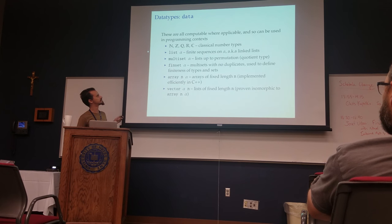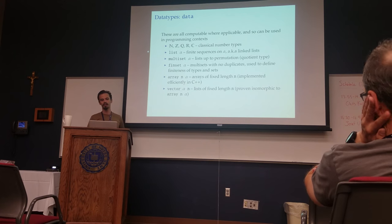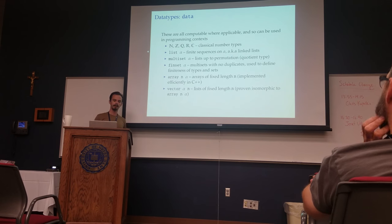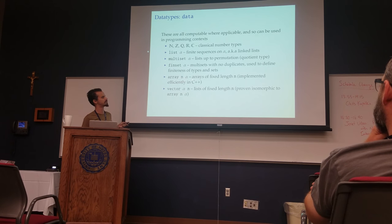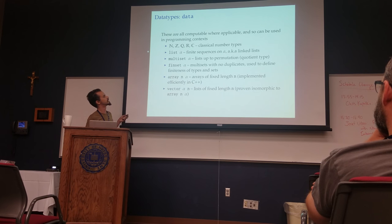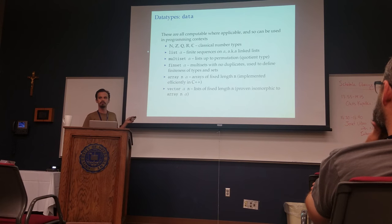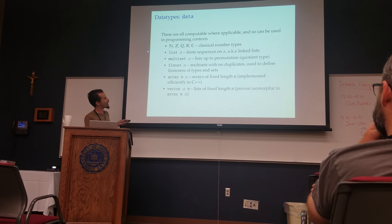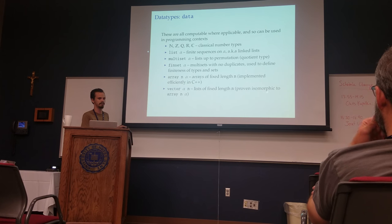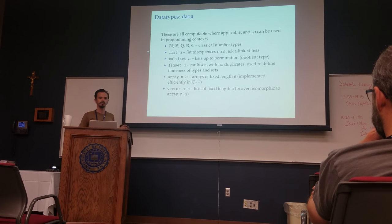Multisets are lists quotiented by permutation. If you take out the duplicates you get finsets. Array and vector are very similar but have different implementations — array is implemented as an array, while vector is actually just a subtype of list. These two are isomorphic and we prove that they are isomorphic in the library. This isomorphism is constructive, meaning it is a function which converts an array into a list and a list back into an array.